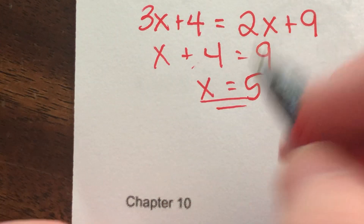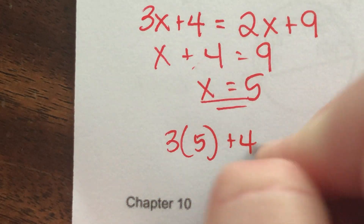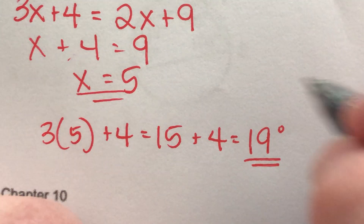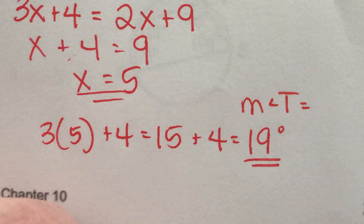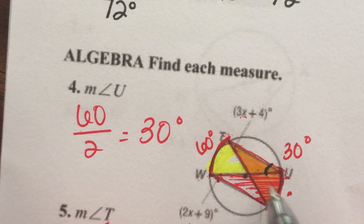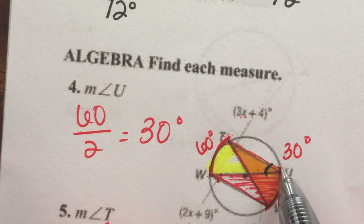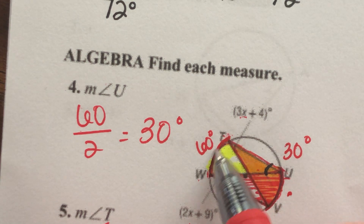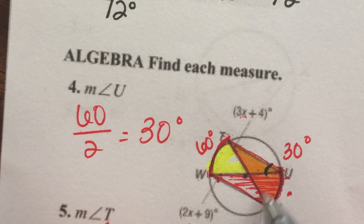The measure of angle T is 19 degrees. If angle T is 19 degrees, then W also has to be 19 degrees, and the arc has to be double that — 38 degrees. Angles U and V share the same intercepted arc, so they're both 30 degrees. Hopefully that's making sense.